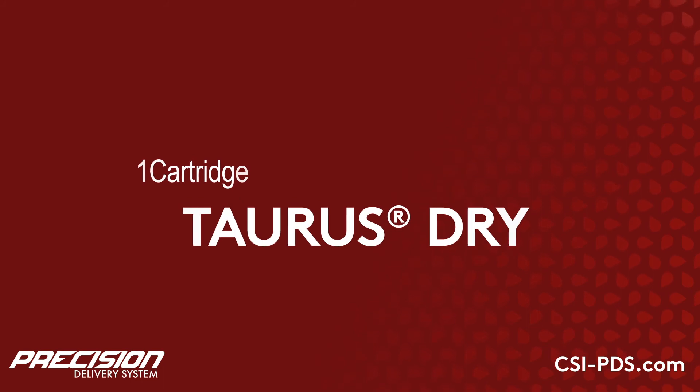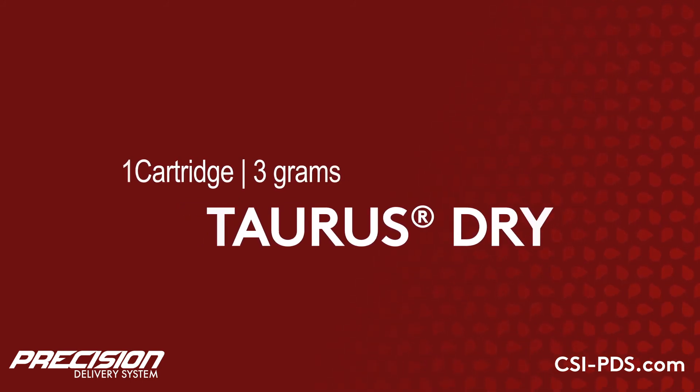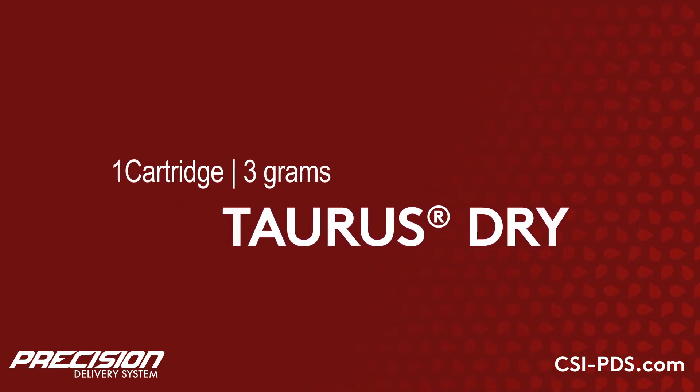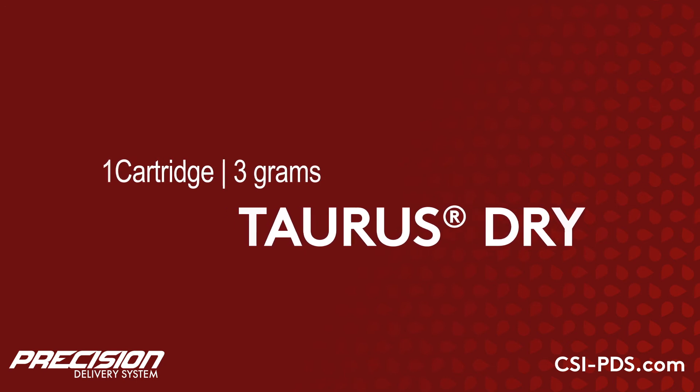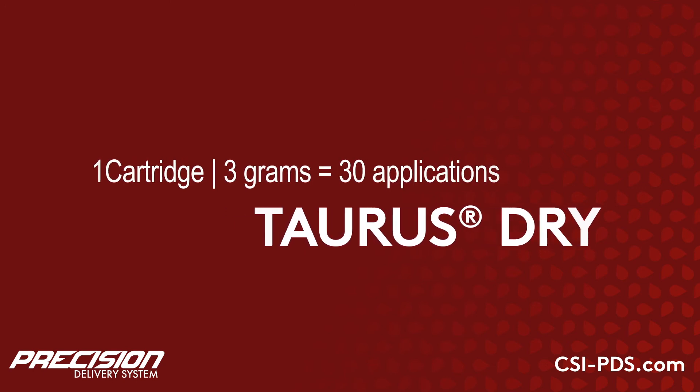Each cartridge of Taurus Dry contains 3 grams of termiticide. If using the lowest rate of 0.1 grams per application, expect to get 30 applications.